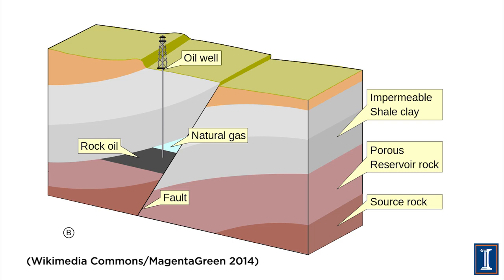Where in this trap would the materials be? Well, gravity works, especially after a hundred million years of settling. The uppermost part of the trap will be filled with natural gas, because gases are lighter. Oil floats on water, so the oil will be in the next layer. And then finally, since this was in a marine sedimentary environment, the rest of the porous rock will be filled with salt water.